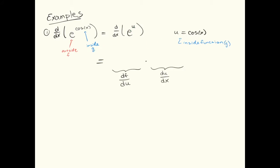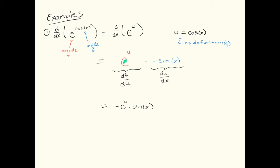What the chain rule says is that in order to take the derivative, I take the derivative of the outside function with respect to u — df du — and then I multiply times du dx, or multiply times the derivative of the inside function. The derivative of the outside function e to the u is e to the u. Multiplying times the derivative of the inside function, we get negative sine. That's the chain rule — you take the derivative of the outside function and multiply times the derivative of the inside function. The final step is to put the x's back in, where u was equal to cosine.